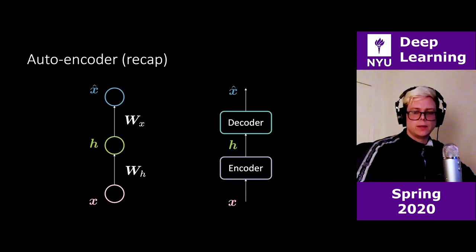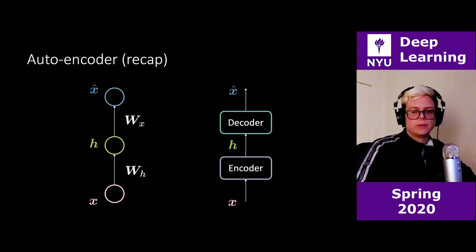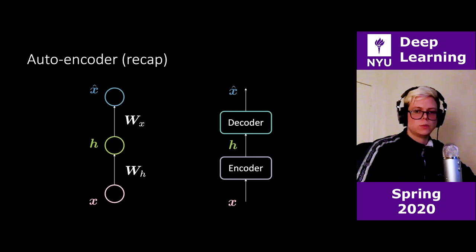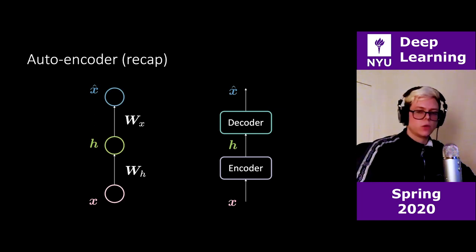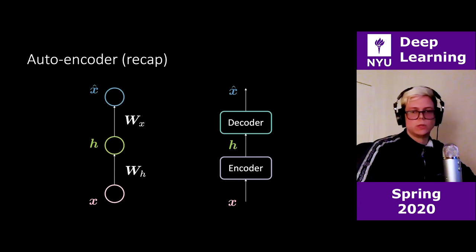These are two macro modules. The input goes inside an encoder which gives us a code h — the hidden representation. In autoencoders, h is called the code, and we have an encoder encoding the input into this code, then a decoder decoding the code back into the same representation as the input.